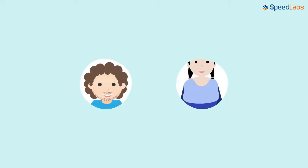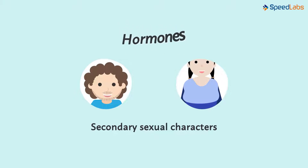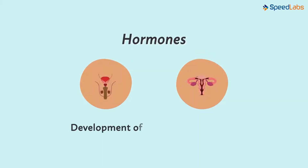Do you know who helps in the development of secondary sexual characters during puberty? Yes, it's the hormones. That is what we've learned in the previous video. But do you know that hormones are not only involved in the development of secondary sexual characters but also function to develop the reproductive organs?